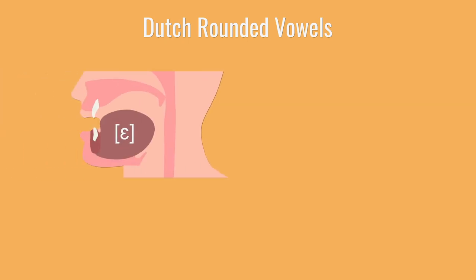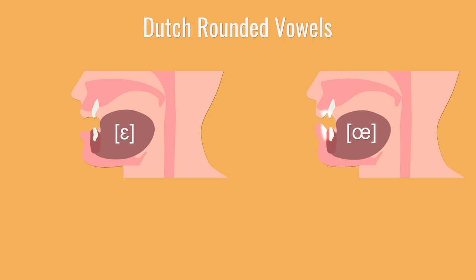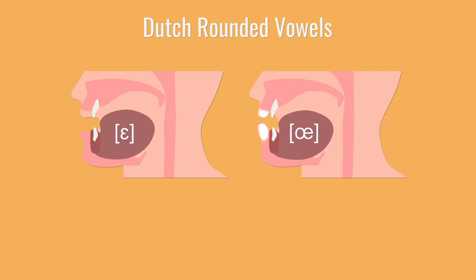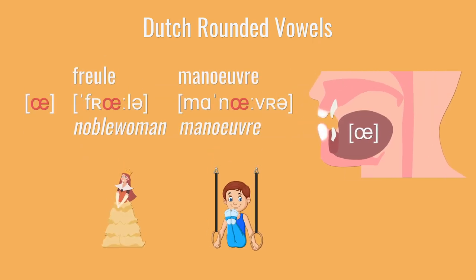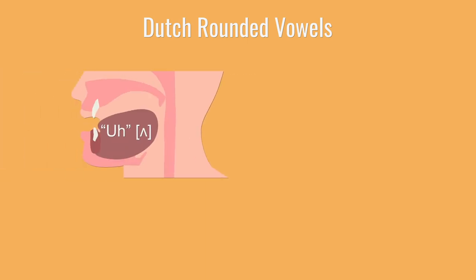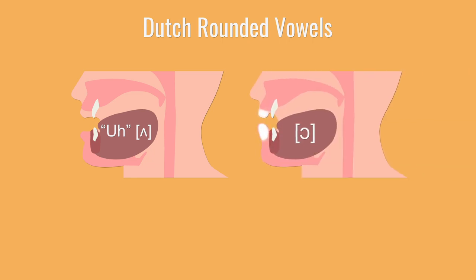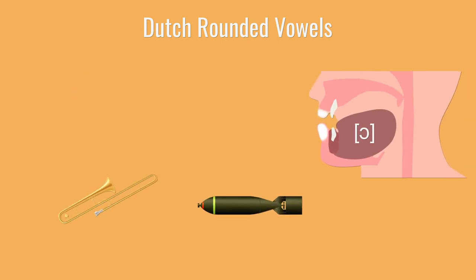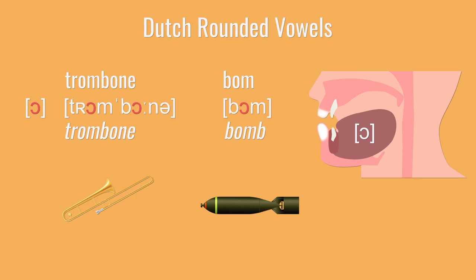If you start with E instead, where your tongue is all the way in the front center position — E — and then round your lips, you get E as in freule or manoeuvre. You can also do this with the American vowel E as in bam. Keep your tongue still in the back center of your mouth — E — and round your lips: E, O, trombone, bom.